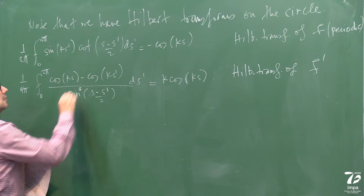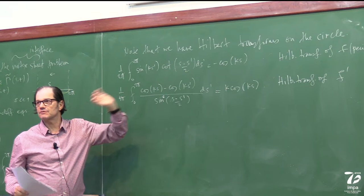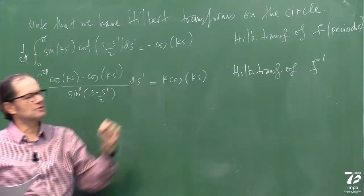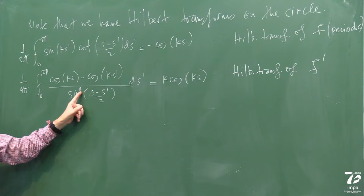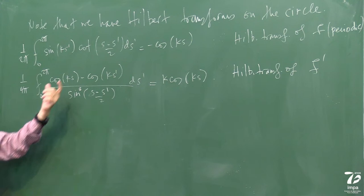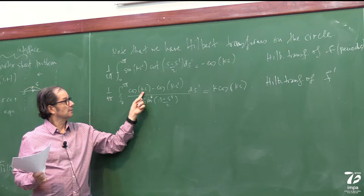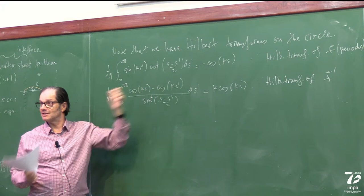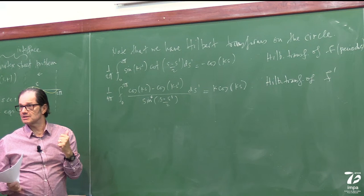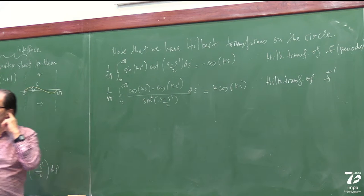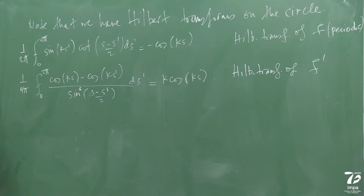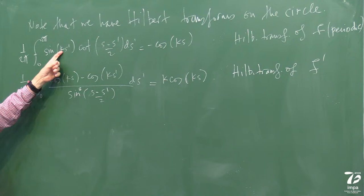Since these functions are differentiable — f is assumed differentiable — this integrand has a singularity of the first order, which is why we can use Cauchy's principal value. When s hits s-prime, the singularity cancels with one factor, giving the derivative of the function evaluated at that point. So it's still a Cauchy principal value, still a pole-type singularity. What is super cool — and I'll come back to this — is that we can compute these integrals with spectral accuracy, meaning for k ≤ n/2, it is exact up to round-off error.